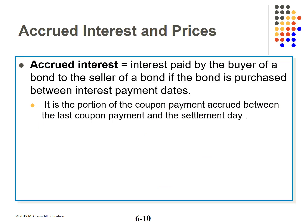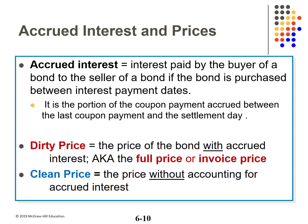When we looked at bond prices in 331, we were actually computing what is called the clean price. When you buy a bond between interest payments, the seller is owed any interest earned up to the sell date — this is called accrued interest. The dirty price is the price including accrued interest; the clean price is the price without, the one we found in 331.